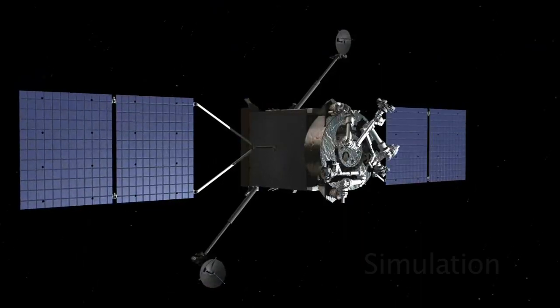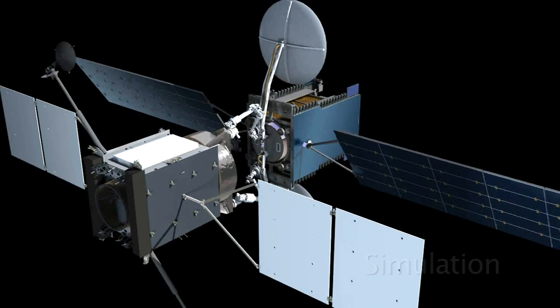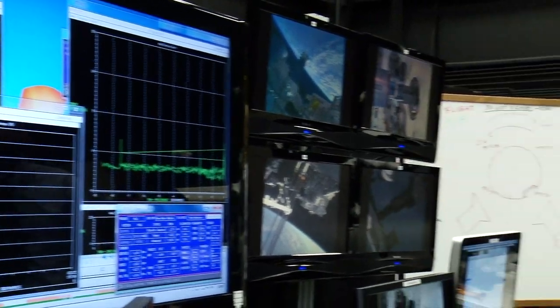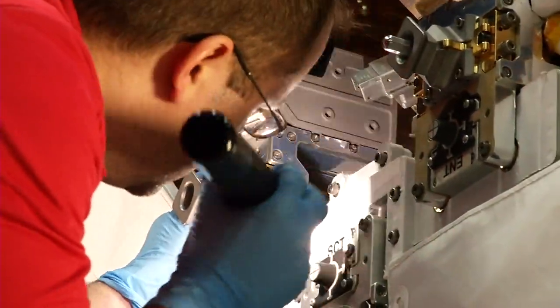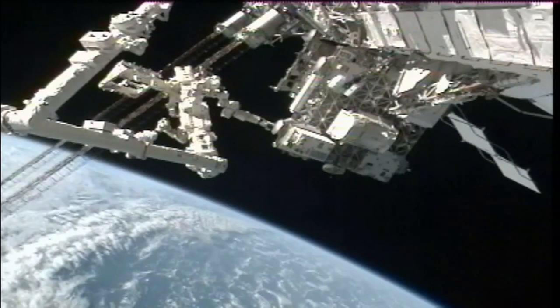NASA wants to prove that robots make sense in space for all sorts of jobs, including the refueling of aging satellites. Midway into the mission, the team preps for the main event. But many steps need to happen before the refueling test. Here's the scene on the International Space Station.